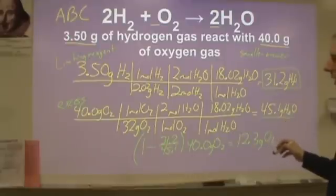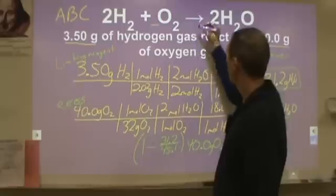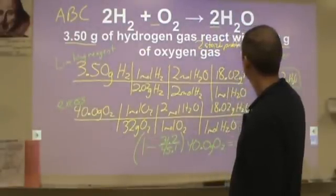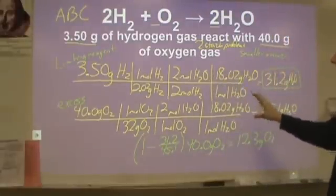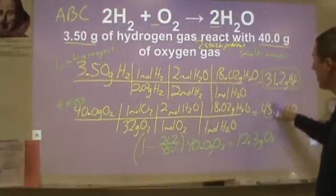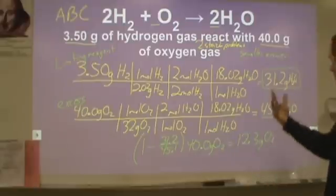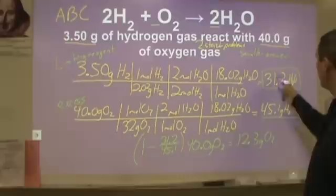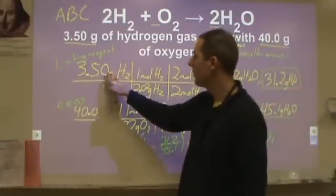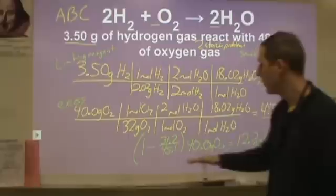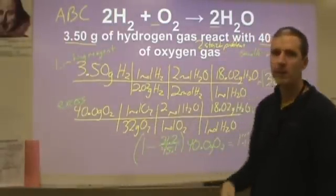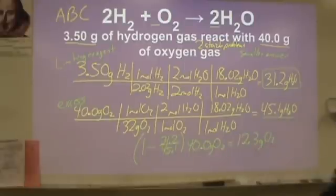So this method will answer every limiting reagent question really easily. To recap: all you do is two stoichiometry problems — which is manageable and doesn't require a lot of thought. Once you have the answers, you have answers to A and B: which is the limiting reagent and how much product you make. For part C, which a lot of people struggle with, you use the simple equation: 1 minus the ratio of your answers times the original amount of excess, and that tells you how much excess you have left over.